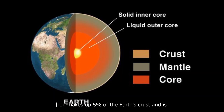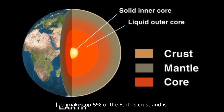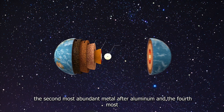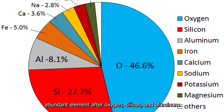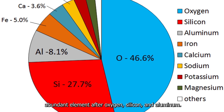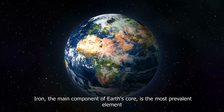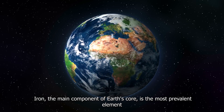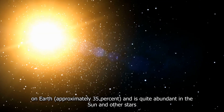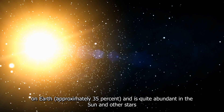Iron makes up five percent of the Earth's crust and is the second most abundant metal after aluminum, and the fourth most abundant element after oxygen, silicon, and aluminum. Iron, the main component of Earth's core, is the most prevalent element on Earth at approximately 35 percent, and is quite abundant in the sun and other stars.